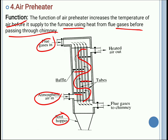The flue gases which are inside the pipe will give up their heat to the atmospheric air, and the atmospheric air will heat up and move out to the combustion chamber. The soot is collected at the bottom of the soot hopper and is removed periodically. Soot is nothing but the burnout particles which are inside the flue gases.